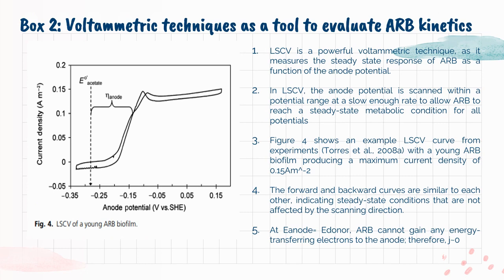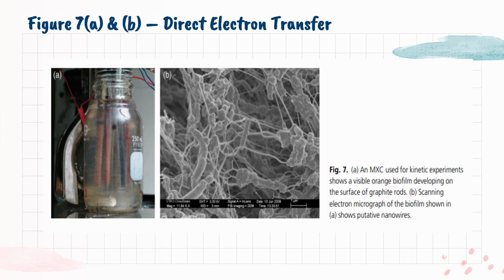Box 2 is about voltammetric techniques as a tool to evaluate ARB kinetics. LSCV is a powerful voltammetric technique, as it measures the steady-state response of ARB as a function of the anode potential. In LSCV, the anode potential is scanned within a potential range at a slow enough rate to allow ARB to reach a steady-state metabolic condition for all potentials. Figure 4 shows an example LSCV curve from experiments with a young ARB biofilm producing a maximum current density of 0.15 A/m². The forward and backward curves are similar to each other, indicating steady-state conditions not affected by scanning direction. At E-anode equal to E-donor, ARB cannot gain any energy transferring electrons to the anode; therefore, J is nearly zero.